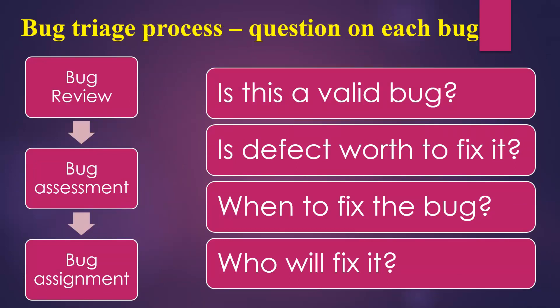How the bug triage process is executed: all team members gather and each bug is reviewed — the bug name, bug ID, and bug description are taken up by the QA lead or test lead who performs an assessment. The bug is then assigned to a particular developer. Four questions are answered for each bug: Is this a valid bug? Is the bug worth fixing? When should it be fixed — current release or next release? And who will fix it?